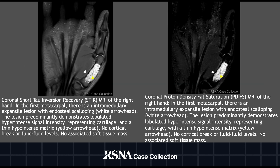On this slide, we have two coronal MRI images. The first is a STIR sequence and the second is a PD fat sat sequence. Both sequences demonstrate the first metacarpal expansile lesion causing endosteal scalloping. The lesion is predominantly hyperintense in signal intensity representing cartilage. The matrix is the hypointense thin curvilinear signal intensity between the cartilage. There's no cortical break or fluid-fluid levels, and no associated soft tissue mass.